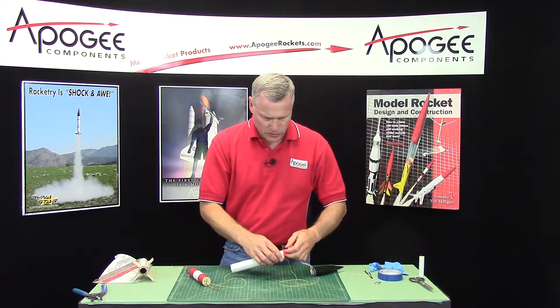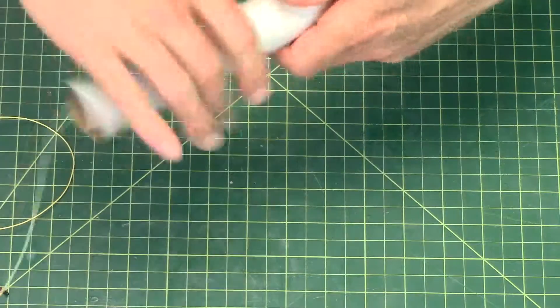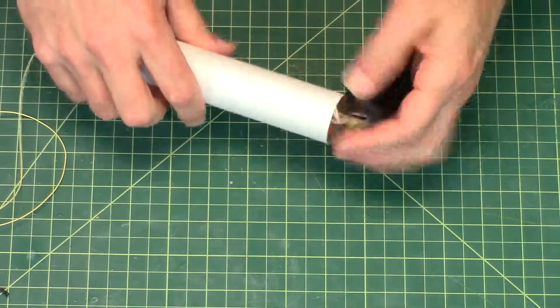And that's going to go into the front of the tube and you can pull the shock cord through and stick the nose cone on.